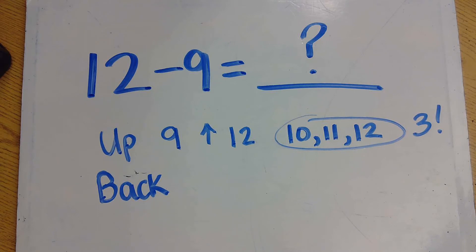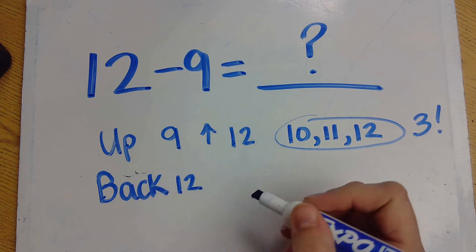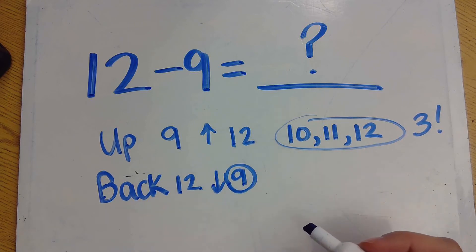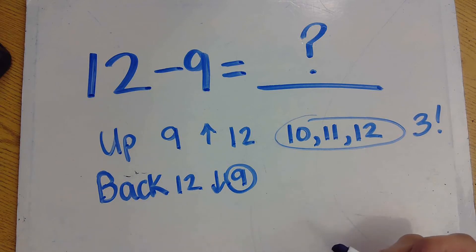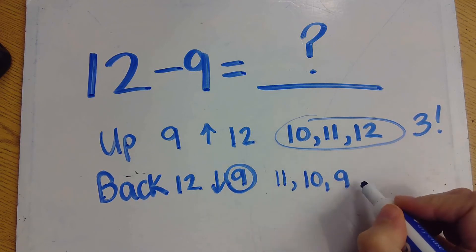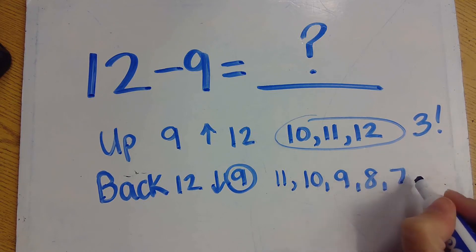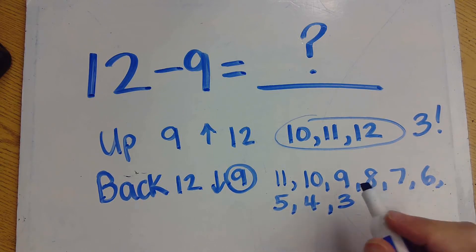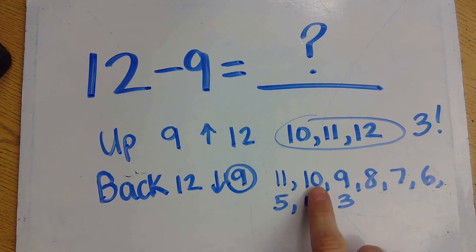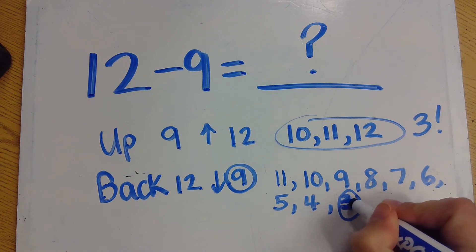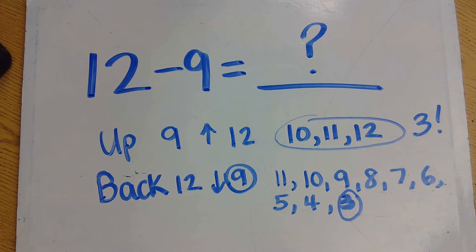Now go ahead and try the counting back strategy. You're going to start at 12 and count back 9 whole numbers total. I'm going to say 12, then write down the next numbers going backwards: 11, 10, 9, 8, 7, 6, 5, 4, 3. Let me double check that I wrote 9 numbers down: 1, 2, 3, 4, 5, 6, 7, 8, 9. My last number that I wrote was a 3, so 3 is my answer.